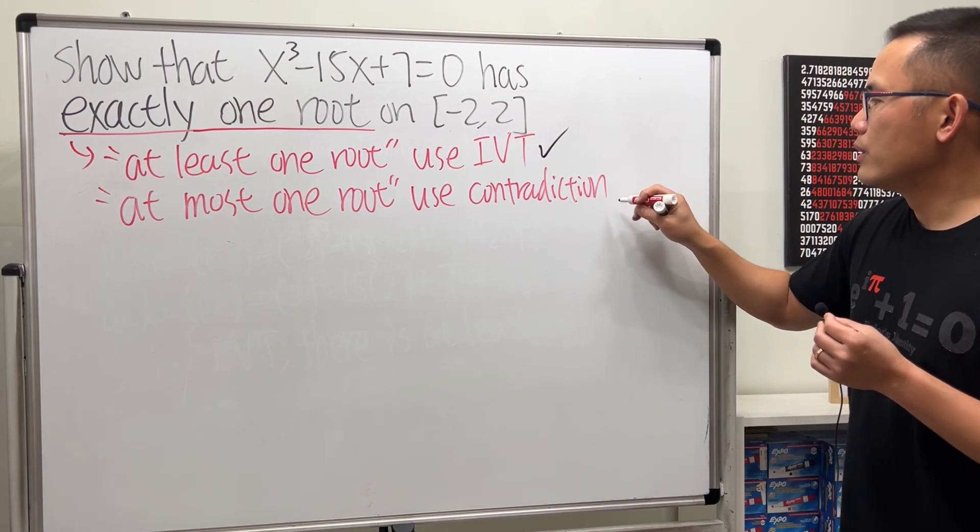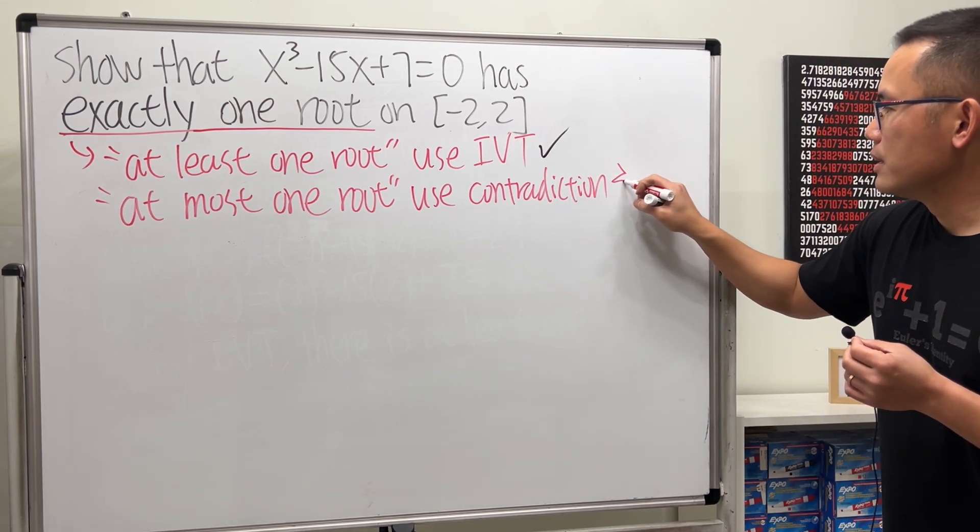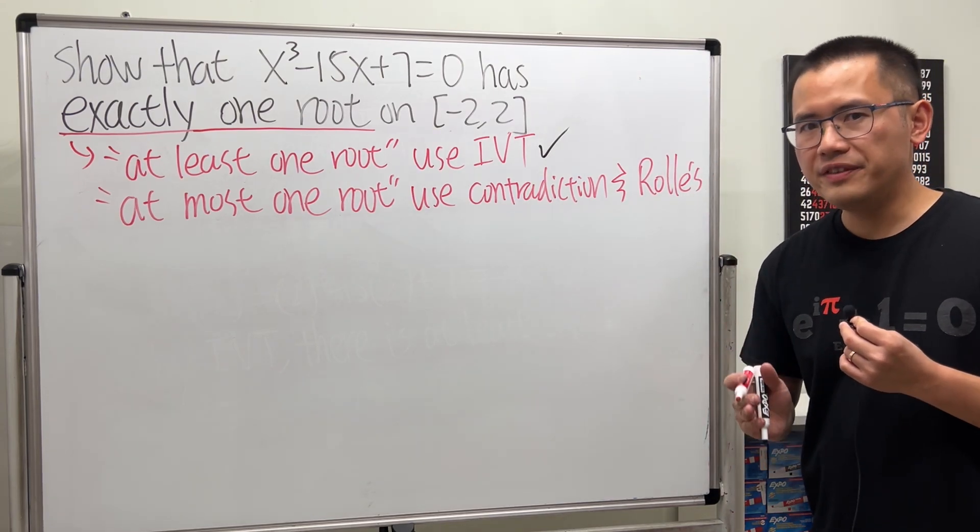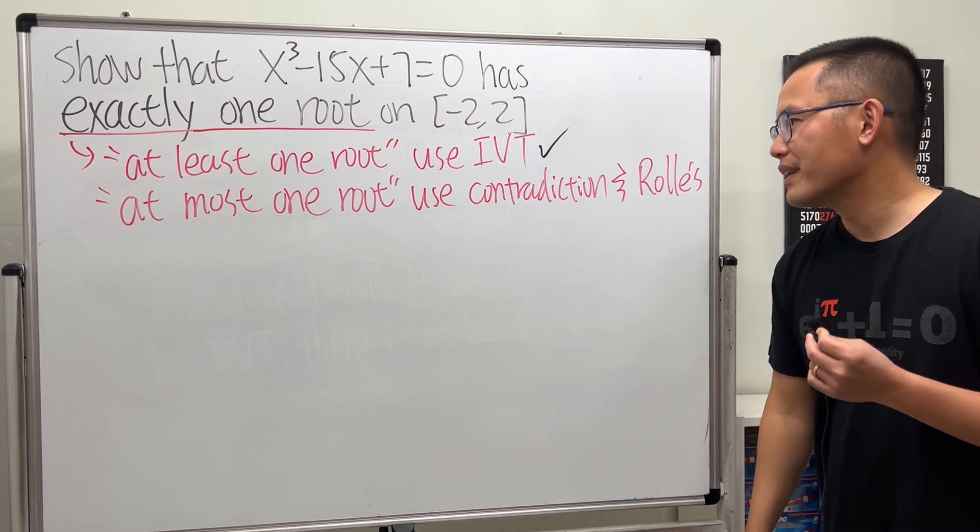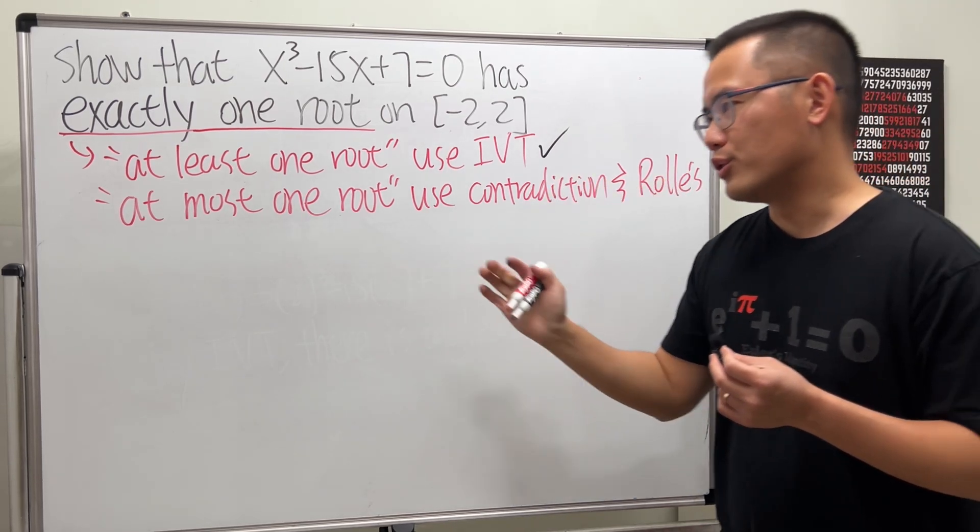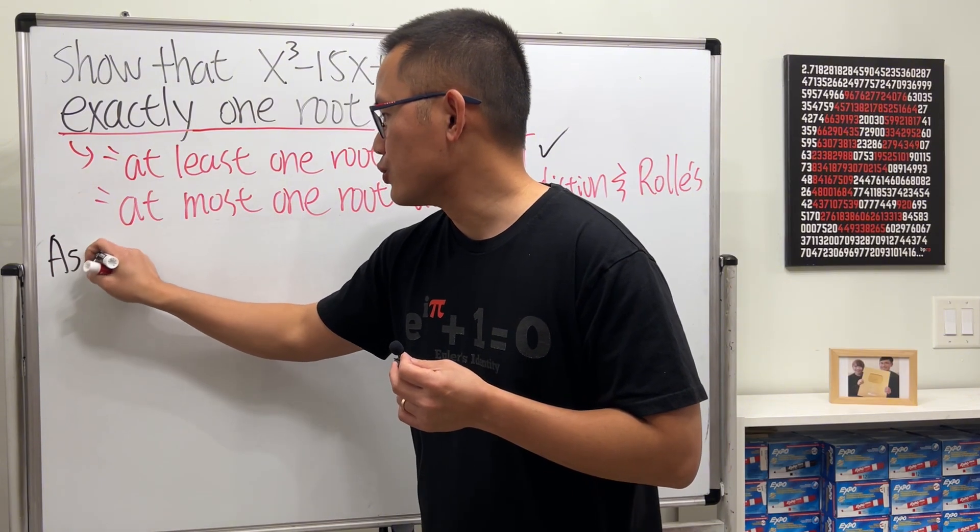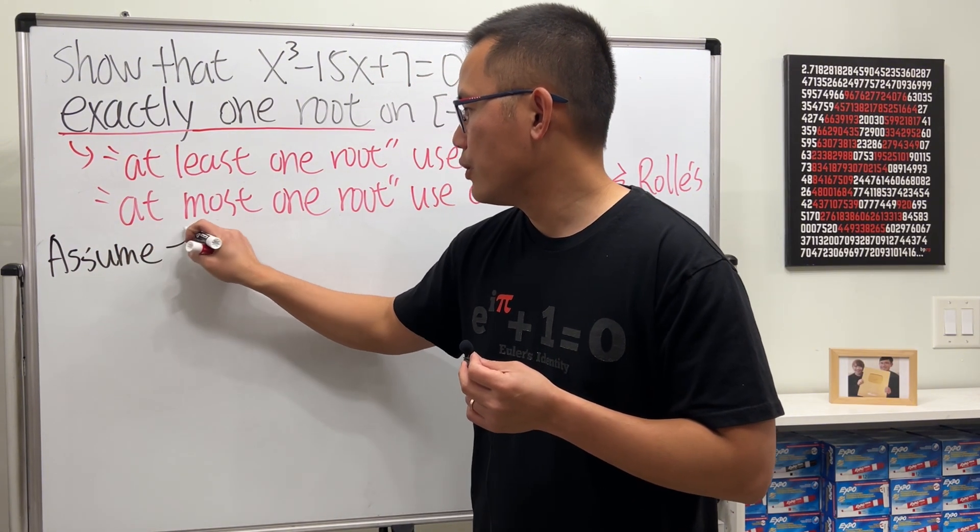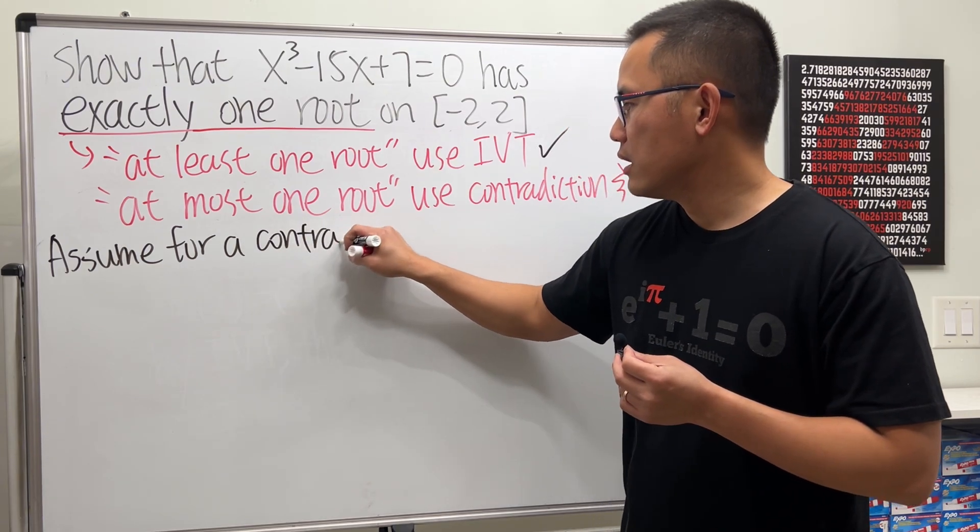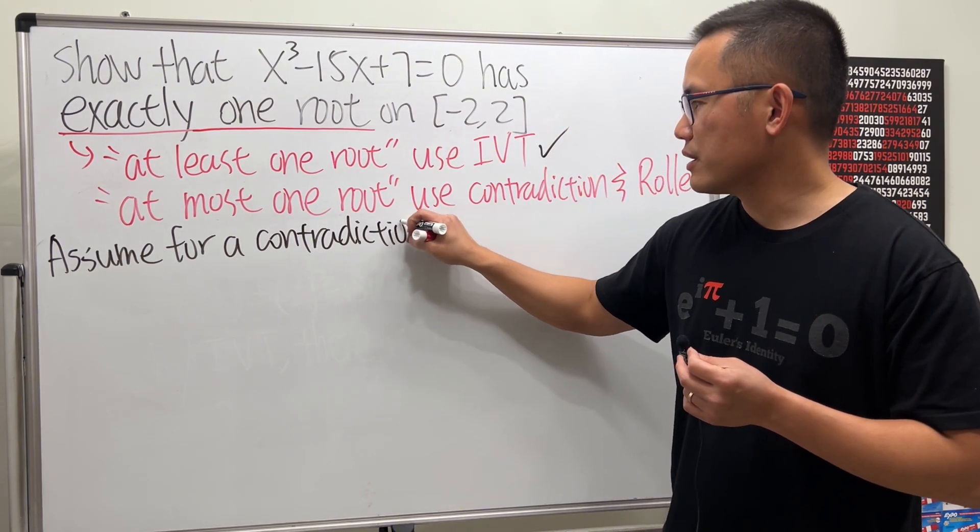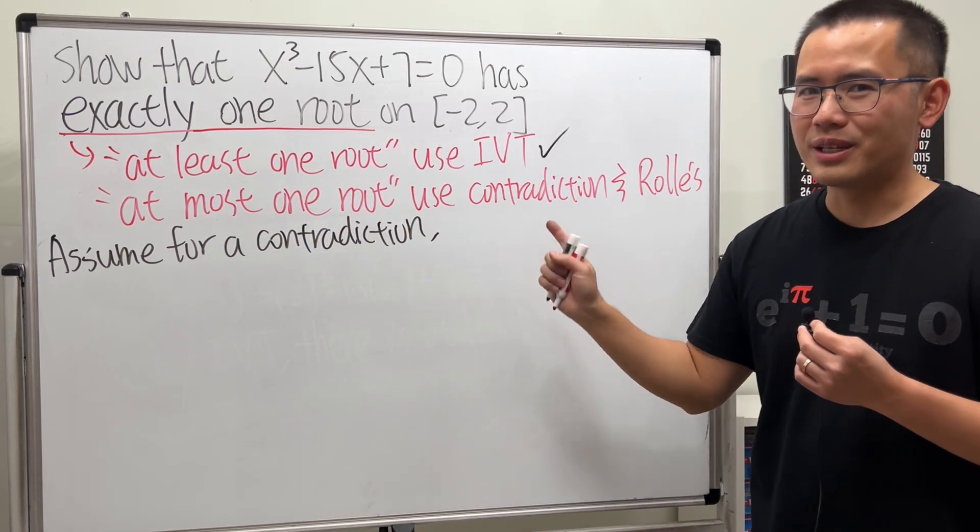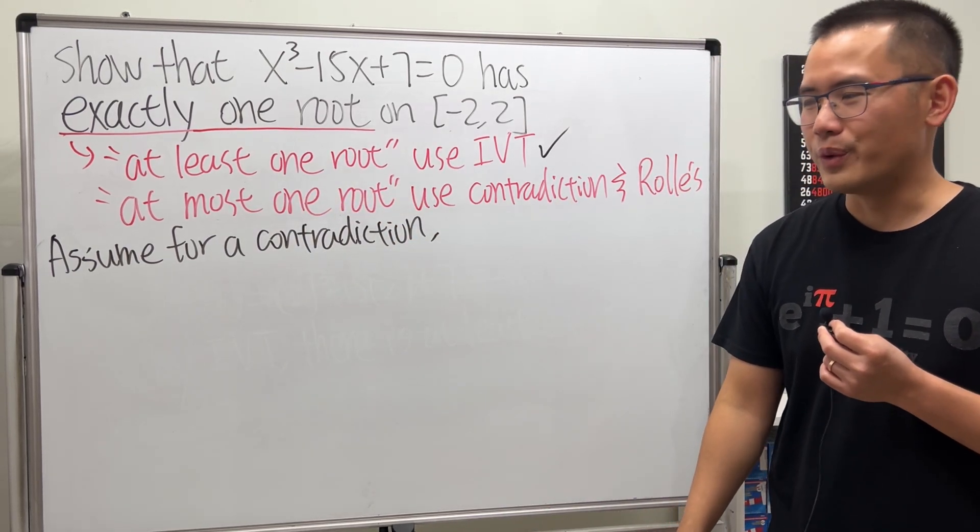And also Rolle's Theorem—and Rolle's Theorem is just a specific case of the Mean Value Theorem. We are going to start off by writing 'assume for a contradiction' to make it clear. Whenever you have at most one of something, try to use contradiction—it usually works out pretty well.